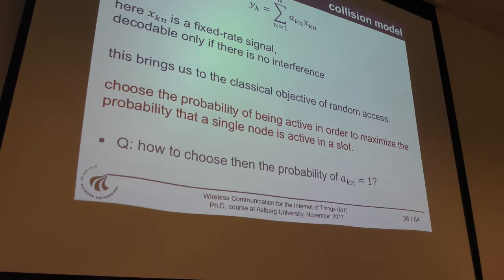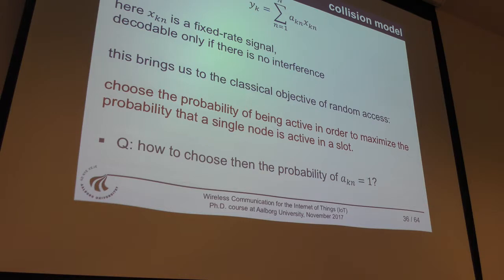The optimal transmission probability is 1/N — 1 over the number of active users — so you need to know how many active contenders there are to choose the probability optimally. I'm not trying to solve the estimation problem here, but highlighting the issue: when people say a scheme is optimal, you must critically ask how they know the number of users, since running an estimation procedure means it's no longer a pure Aloha system.